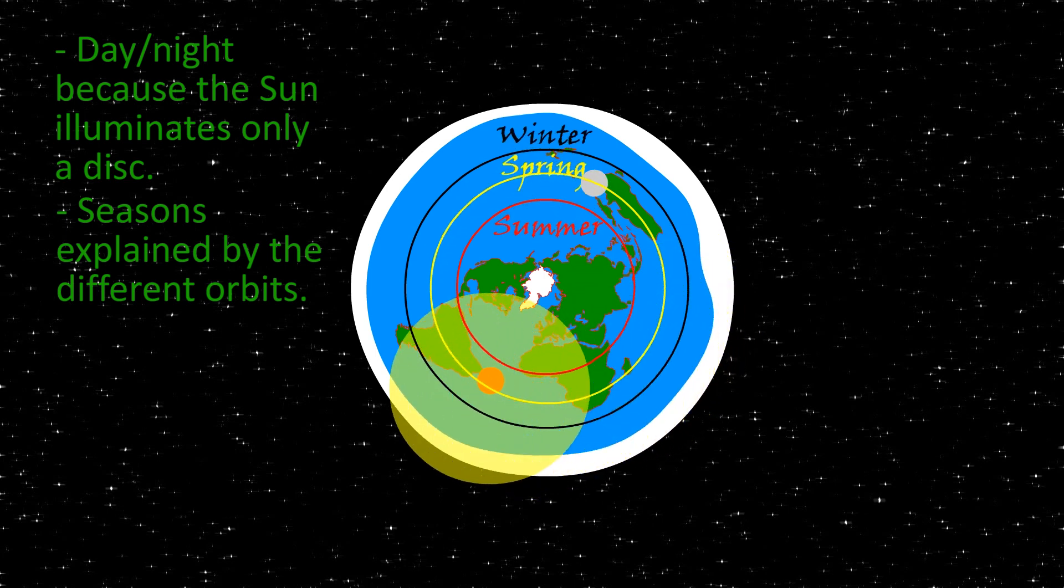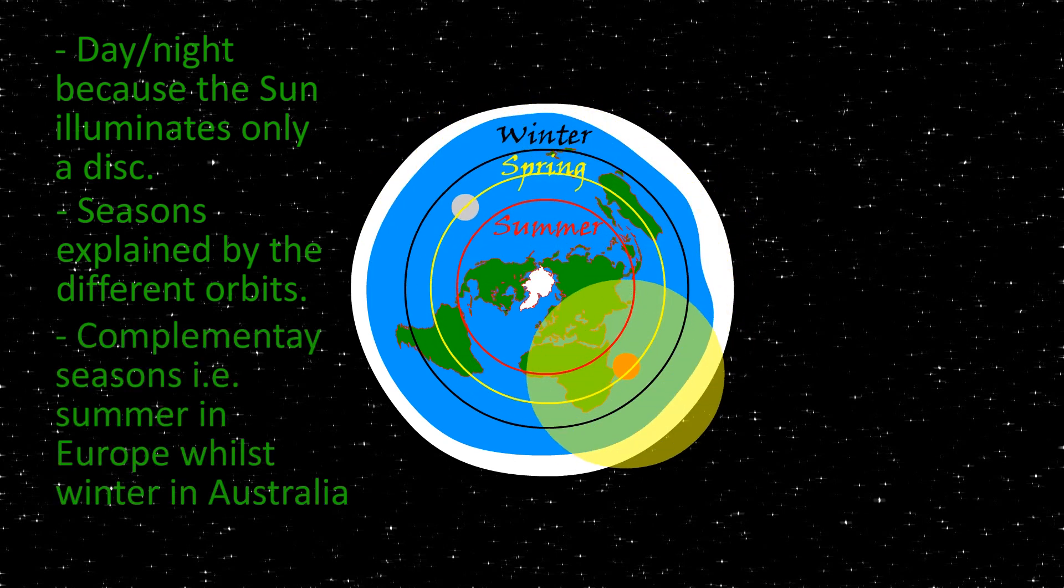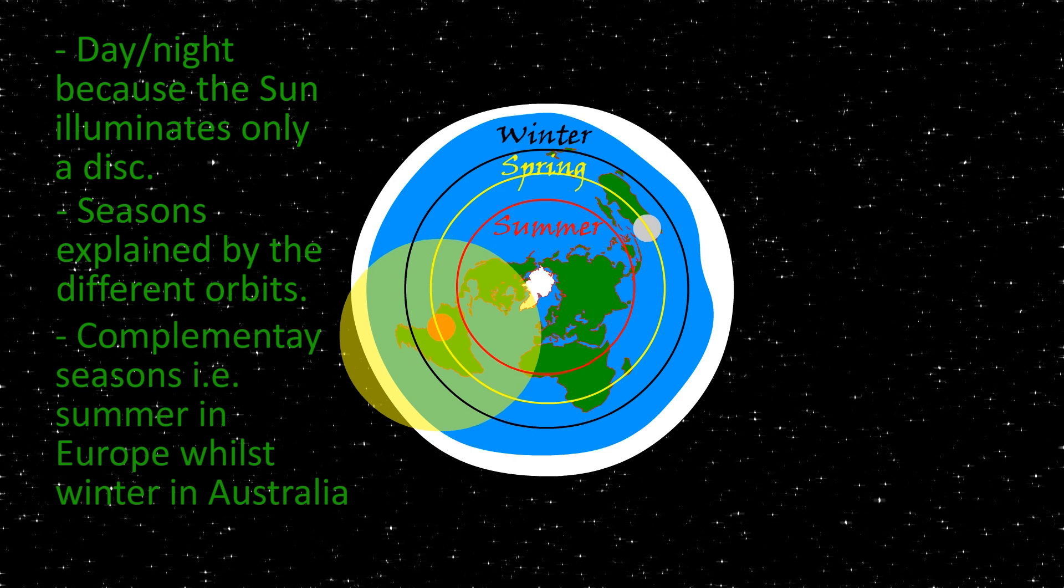For example, when the Sun follows the red circle we have summer in the Northern Hemisphere, probably because the Sun is closer and that means more heat. It even explains the constant daylight during summer at the North Pole and the complementary seasons between the two hemispheres. So far so good.